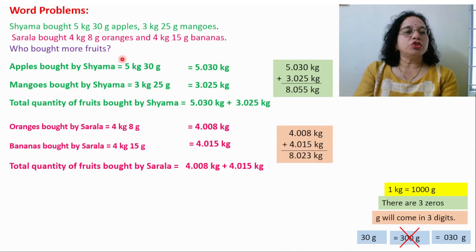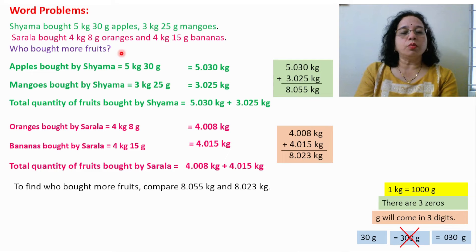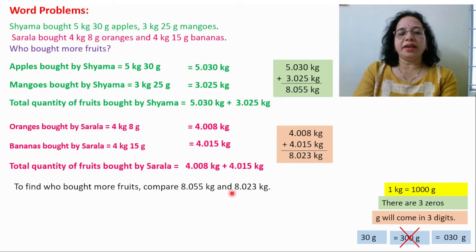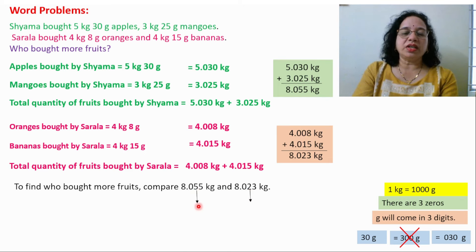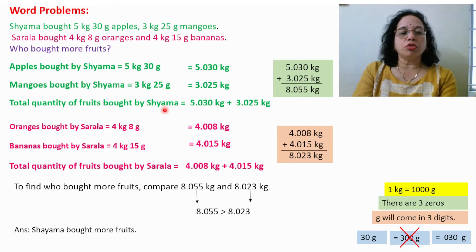Who bought more fruits? Compare 8.055 and 8.023. Starting with the whole part: 8 and 8 are the same. Next digit: 0 and 0 are the same. Next: 5 and 2 — 5 is greater. So 8.055 is greater, which is Shama's total. Therefore, Shama bought more fruits.